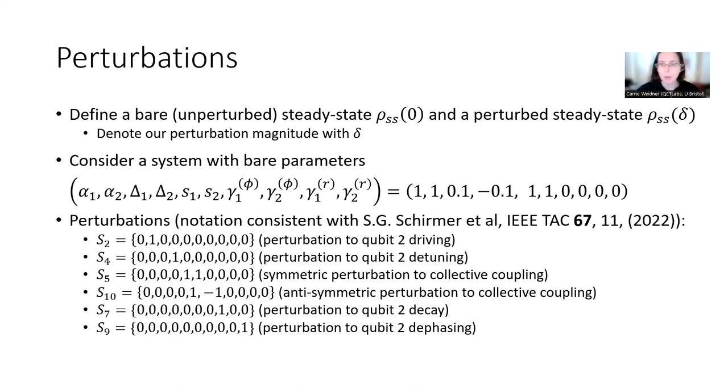And the perturbations, where we have a notation that's similar to a paper that we recently published in the Transactions on Automatic Control, this is basically giving us a consistent notation with that manuscript. We look at the qubit two system because it's symmetric to the qubit one system, and this just simplifies our analyses. But we have the perturbation to qubit two driving, and then you see detuning, a symmetric and an anti-symmetric perturbation to this collective coupling, as well as a perturbation to qubit two decay and dephasing.